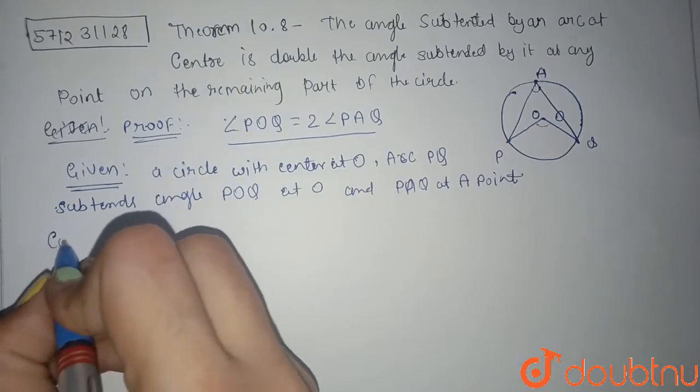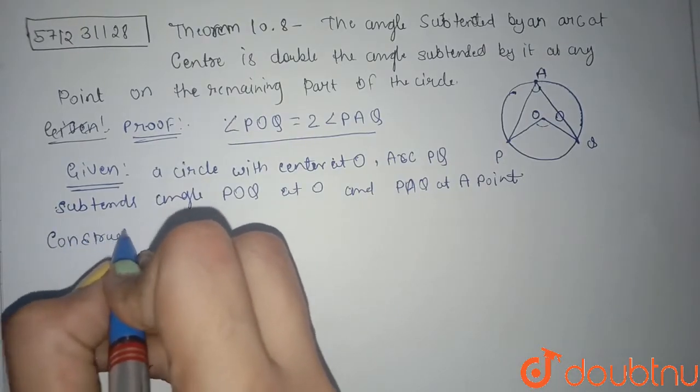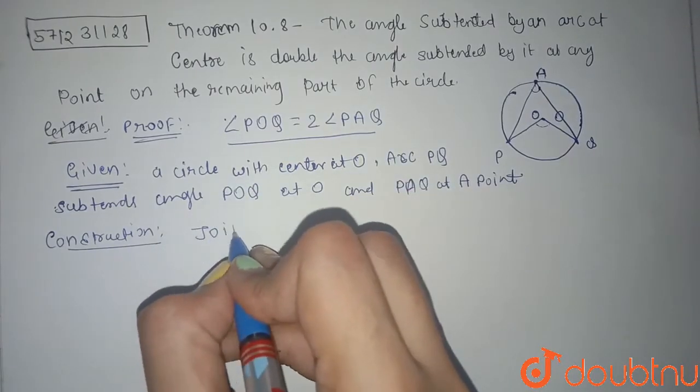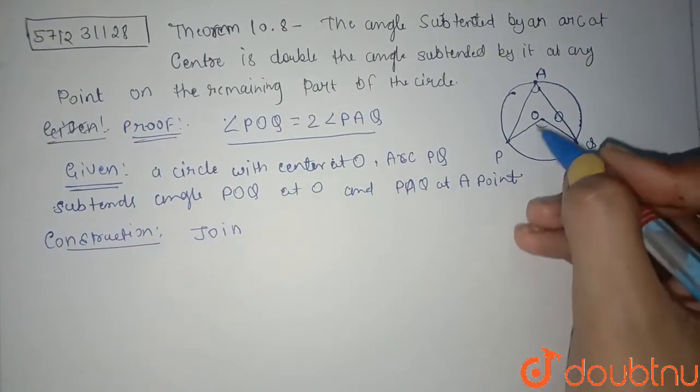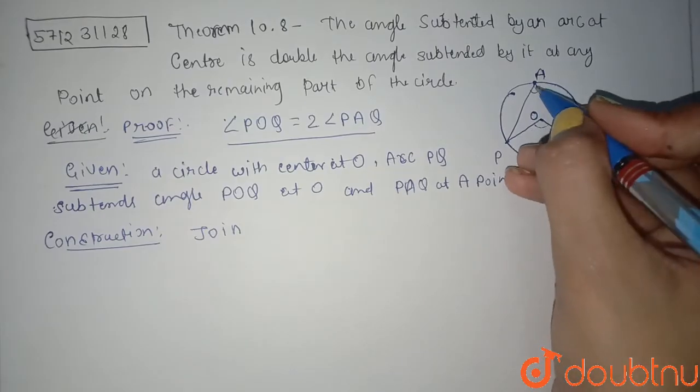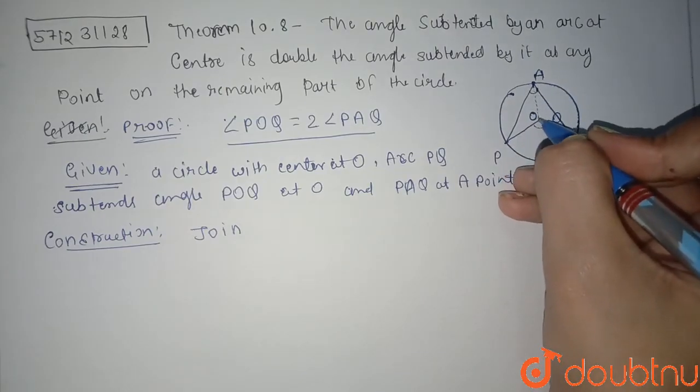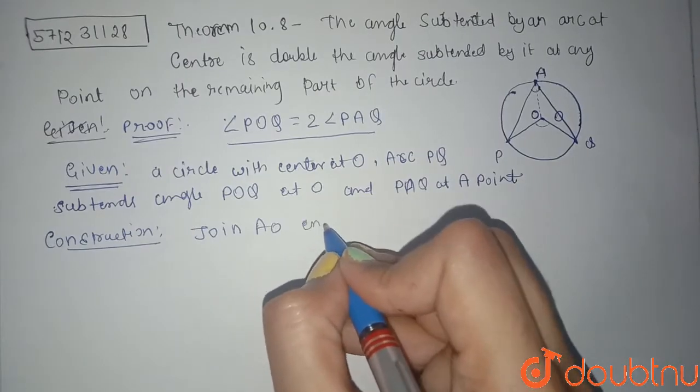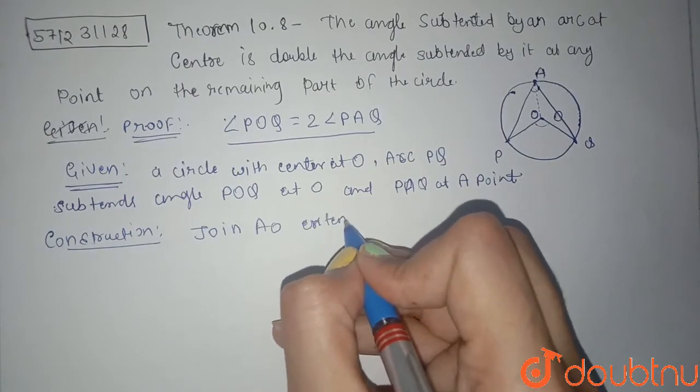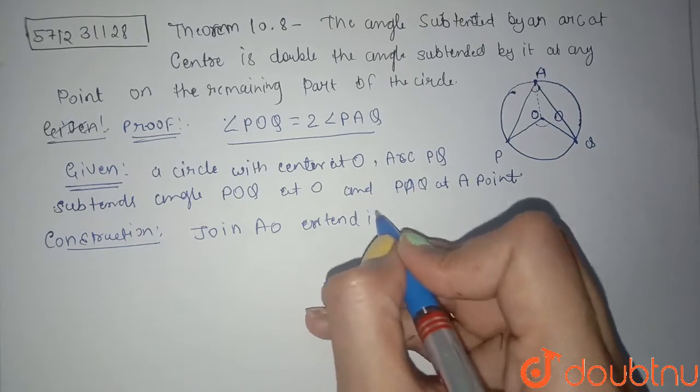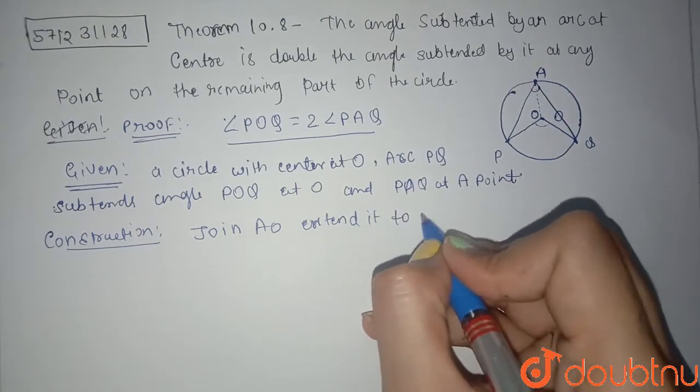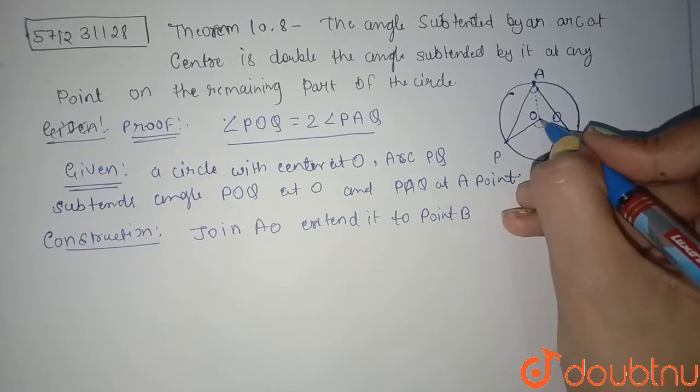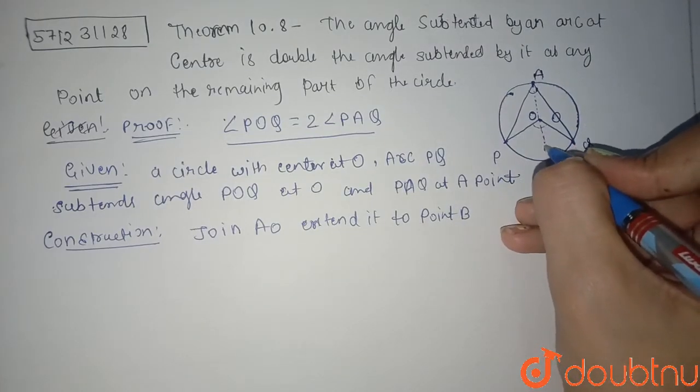Construction: I'll join AO and make a triangle. Also I'm extending to point B. Let's say here is any point B. This is the construction.